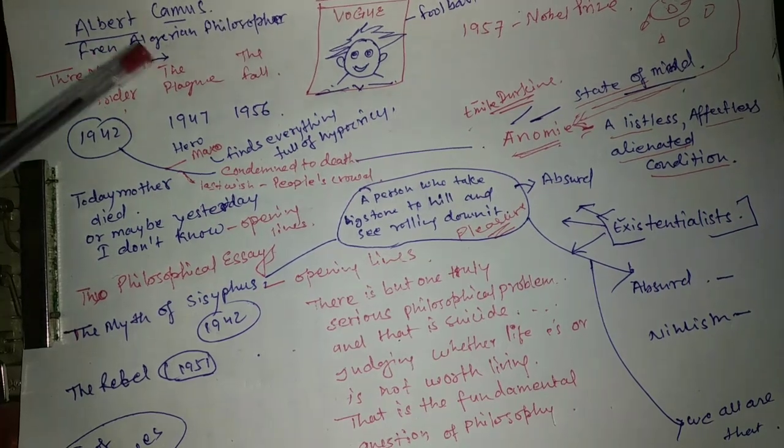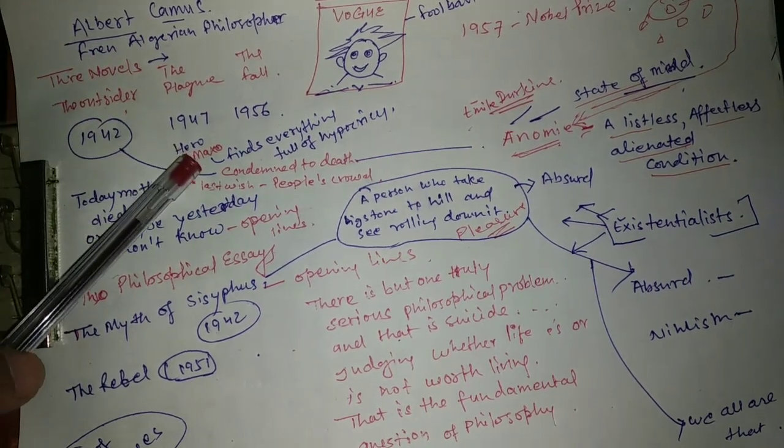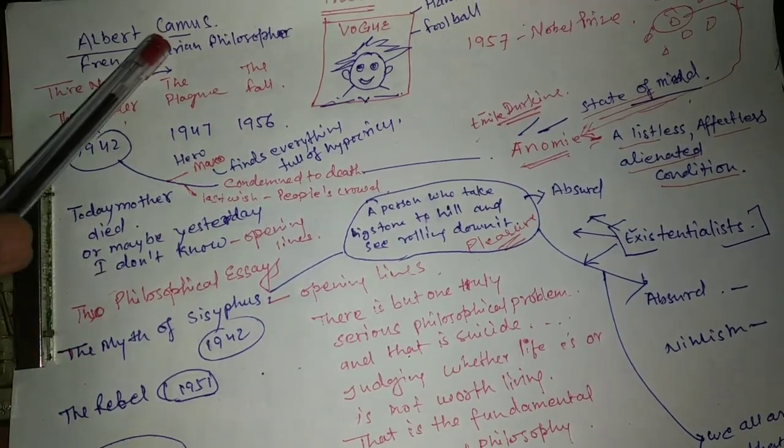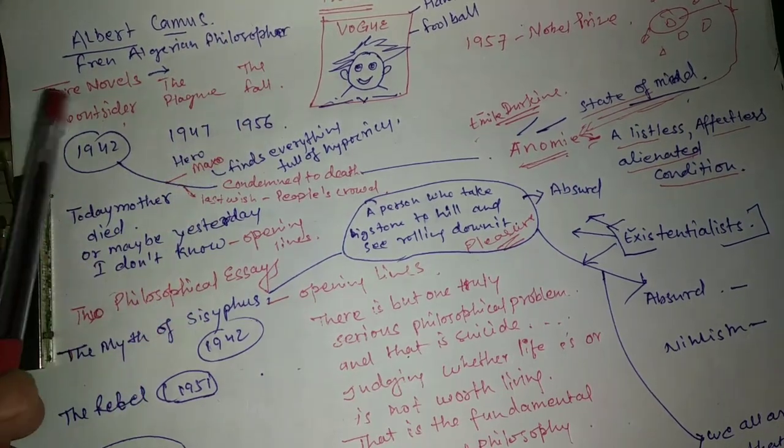Today we are talking about Albert Camus. Some people also study this book, but his name is Albert Camus. He was a French Algerian philosopher. He wrote three novels.